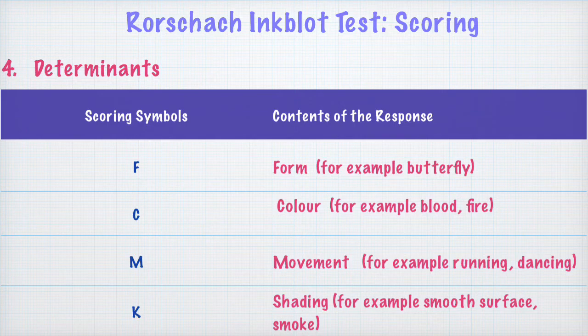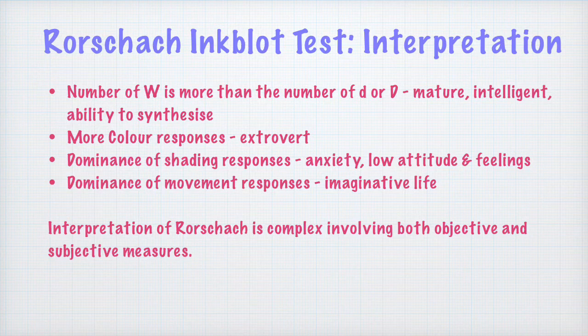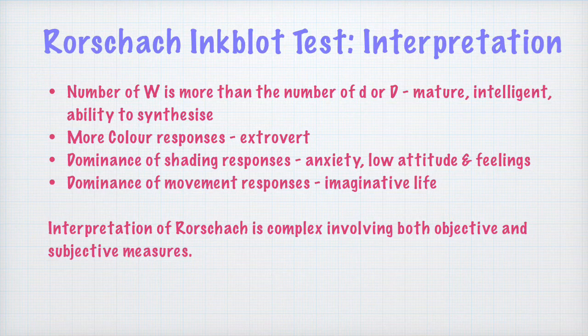Once scoring is done, we have a list of how many F, K, W, and other responses a person has across all four dimensions and their categories. The next step is to interpret what these numbers mean. Interpretation of Rorschach scores is a very complicated task that needs a lot of training and expertise. What we are covering here is just a glimpse of Rorschach interpretation, as the interpretation is highly complex and very subjective.